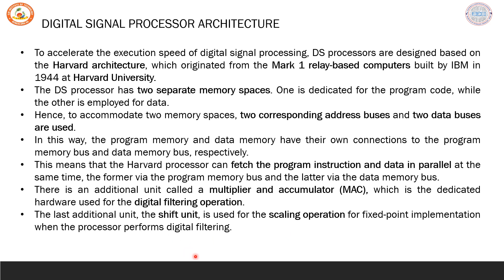The final unit we need is a shift unit. A shifter is useful to perform scaling operations. Whenever we are using fixed point implementation, we require to scale up or scale down the operands to prevent overflow. Right shift can be used to scale down the operand, and if scaling up is required, we perform the left shift operation.